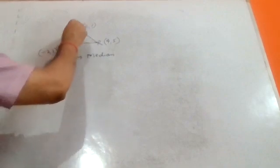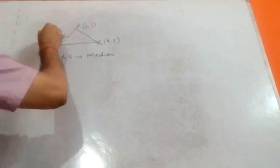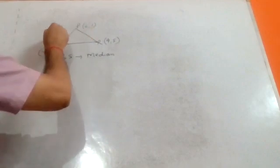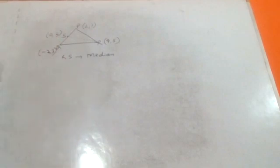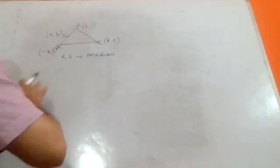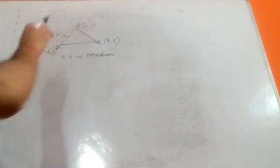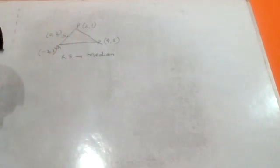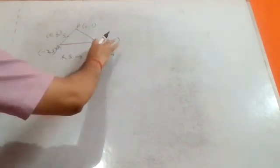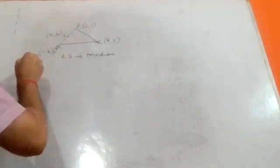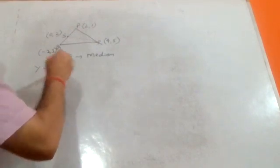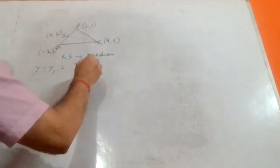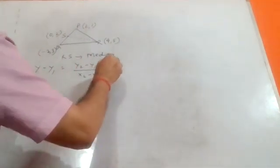The midpoint of PQ is calculated as: x equals two plus minus two over two equals zero, and y equals one plus three over two equals two. So the midpoint, let's call it S, is at zero comma two. We need to find the equation of median RS.